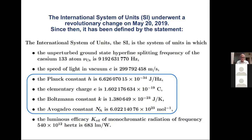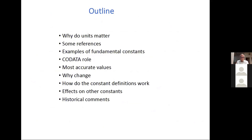There's also the luminous efficacy of monochromatic radiation, which defines the candela — that's for light brightness. Here are the questions to address: why do units matter, examples of fundamental constants, the CODATA and what they do in terms of defining values, how the most accurate values are determined, why we should change the system, how the definitions actually work, why constants give you measurement standards, and how the redefinition affects other constants besides the defining ones. And then a couple of historical comments at the end.